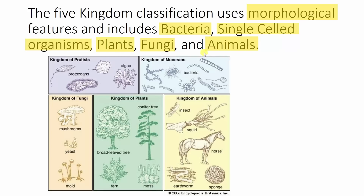We've heard of animals and plants before, but let's go through some of the others. In the bacteria kingdom, bacteria can include lots of different microorganisms. They live in our gut and are commonly referred to as germs in some cases, but not all bacteria is bad bacteria. Then we have single-celled organisms, which include protozoans and algae. Single-celled organisms can sometimes also be bacteria, which is the debate with this system — there's a little bit of overlap between these two groups. Generally speaking, single-celled organisms are made of one cell, whereas bacteria are generally a lot smaller and can be of different forms.